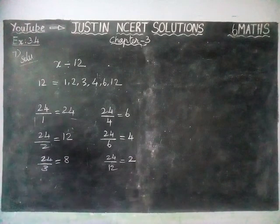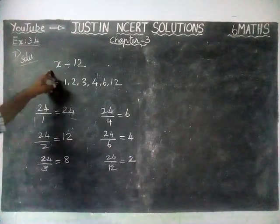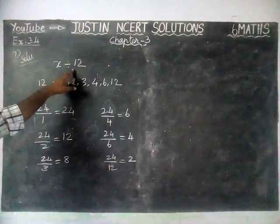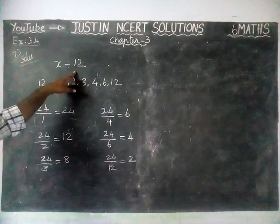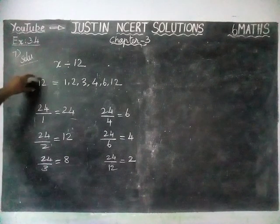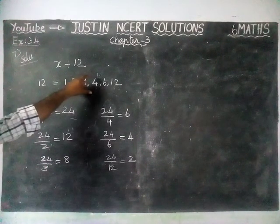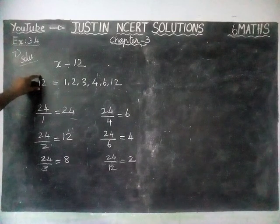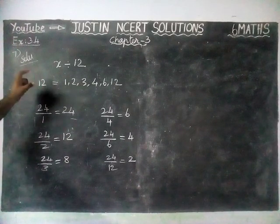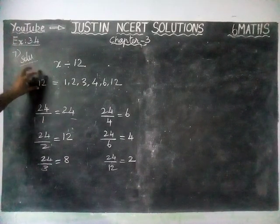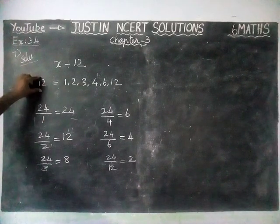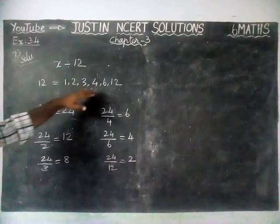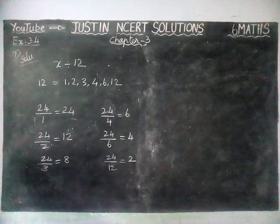Therefore, if a number is divisible by 12, definitely that number is divisible by all its factors. This concept is not only for 12 — it is applied for all numbers. If a number is divisible by any number, then all its factors will also divide the same number.